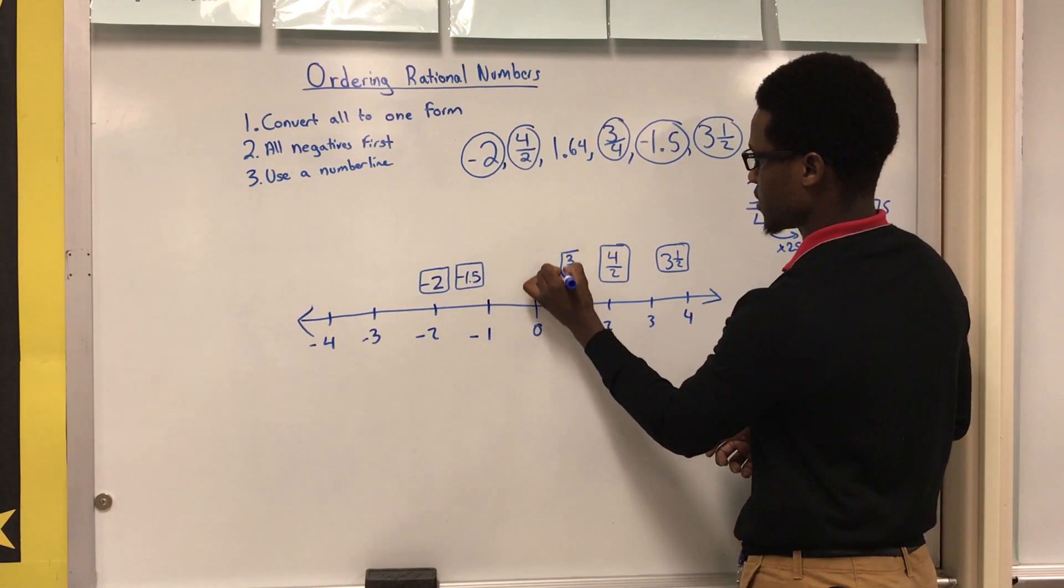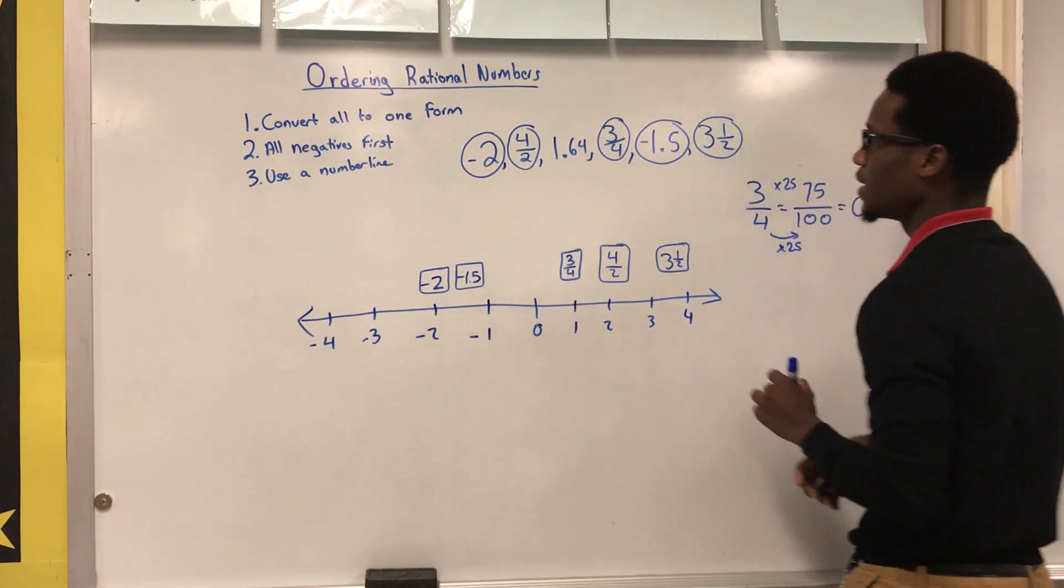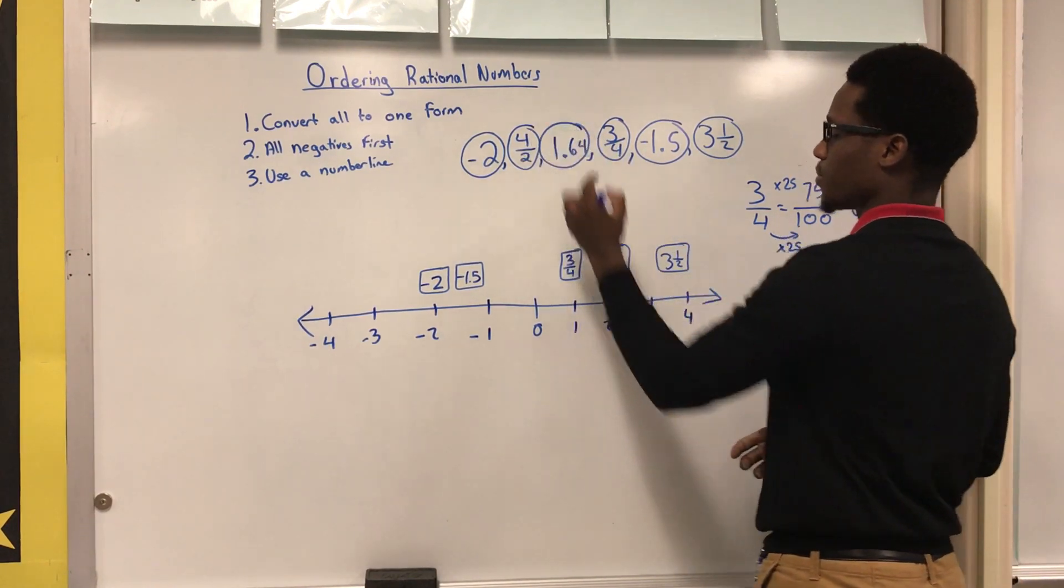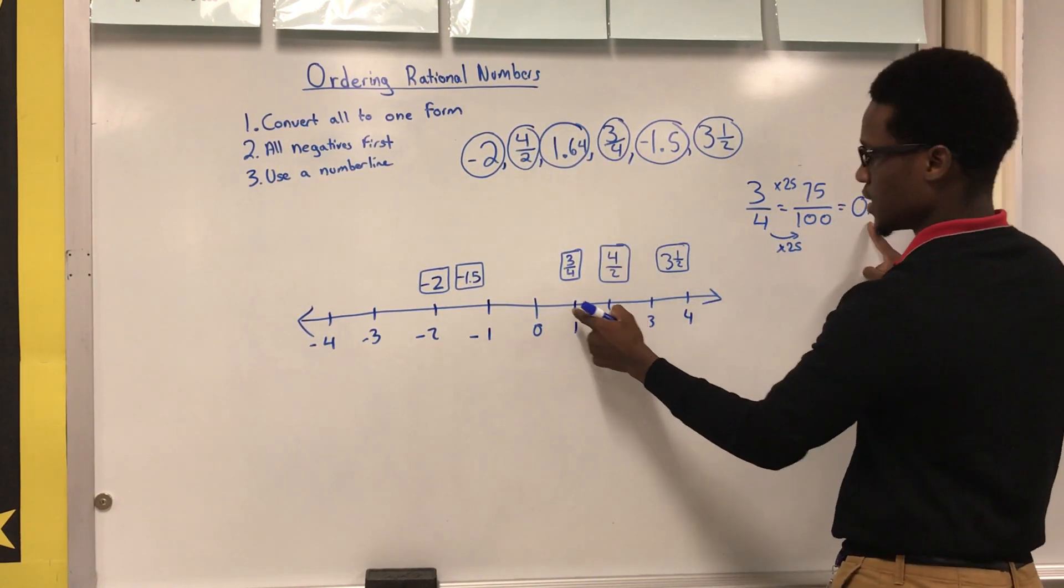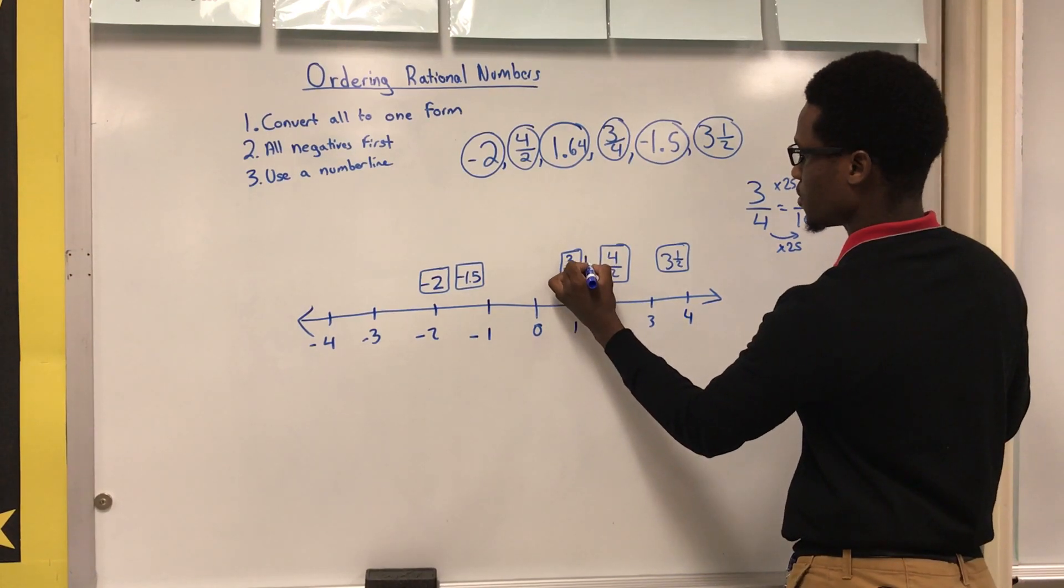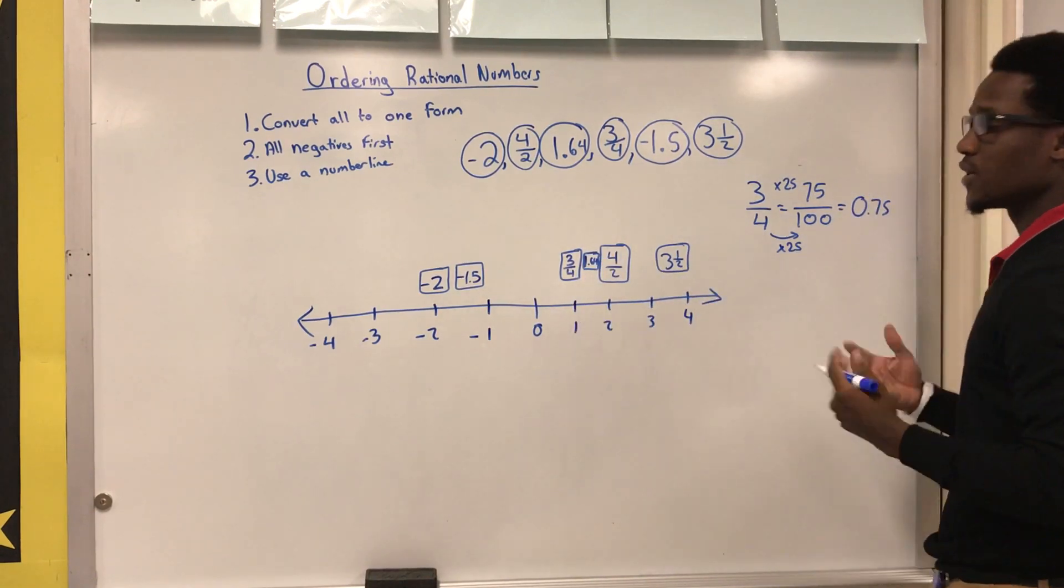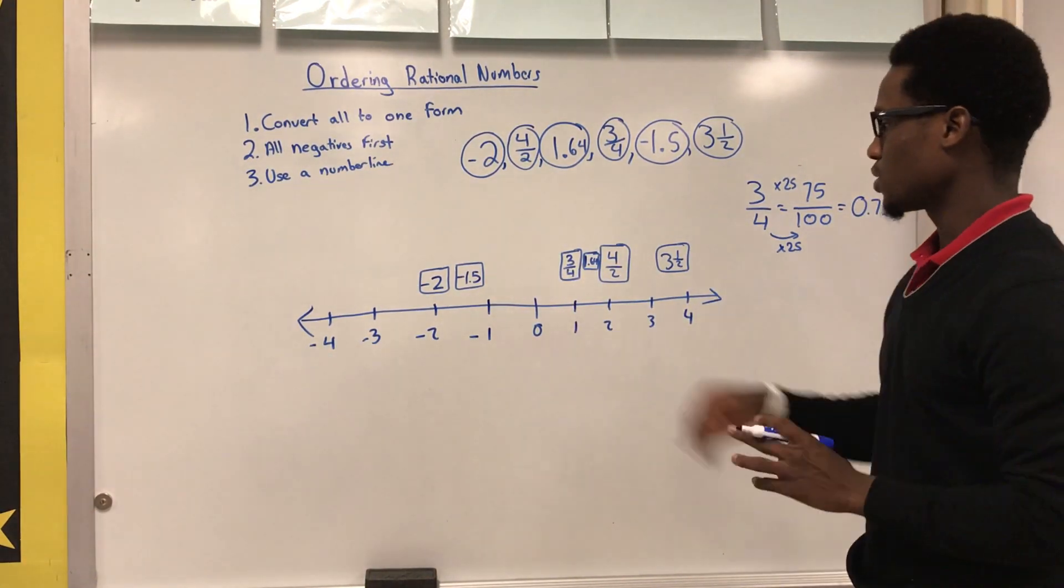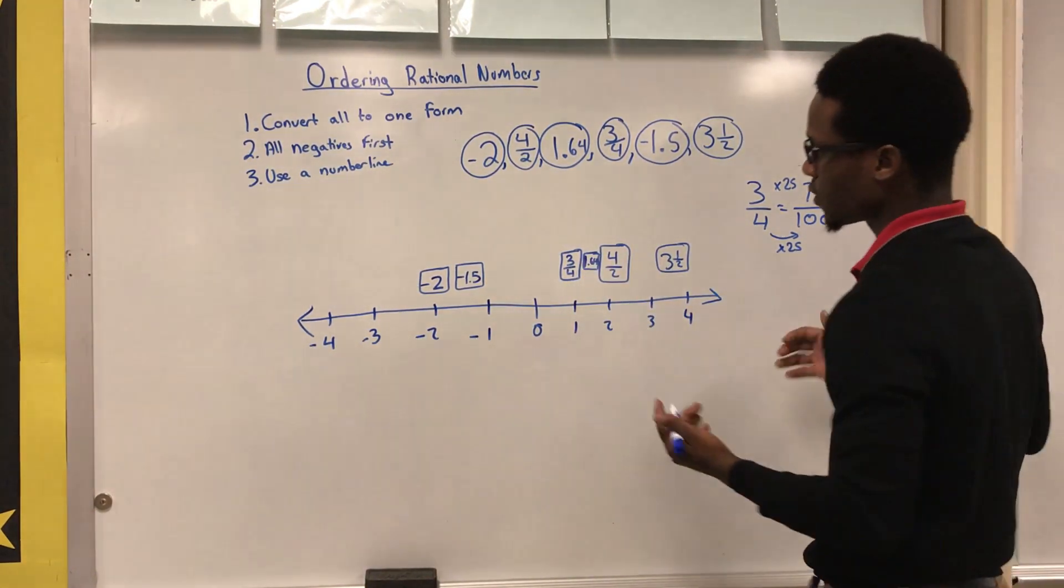And then lastly we have to figure out what 1.64 is. Since this is over here, we're guessing 1.64 is going to be somewhere in between three fourths and four over two. All right, so this is what we have so far.